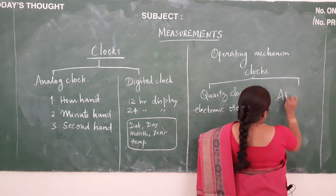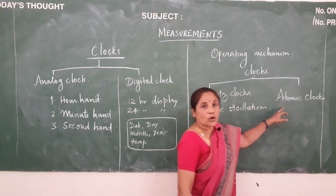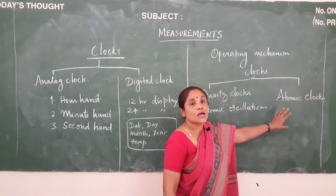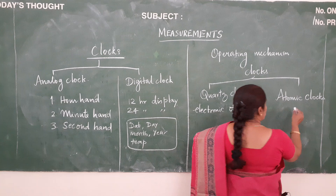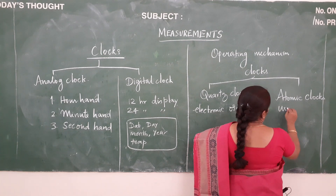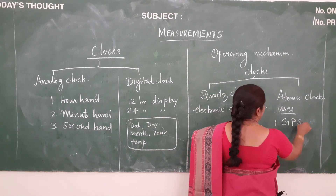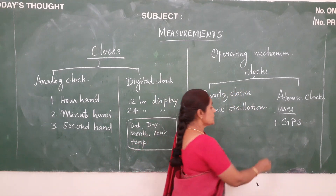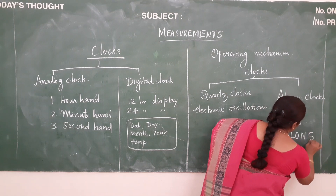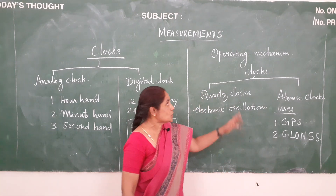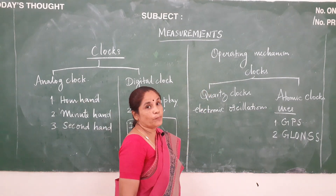Next we will move on to atomic clocks. Atomic clocks are driven by the periodic vibrations which are seen within the atom. The uses of atomic clocks include: first, it is used in global positioning system (GPS); and second, it is also used in global navigation satellite system (GNSS). That completes the classification of clocks based on operating mechanism.